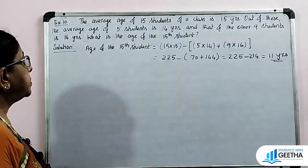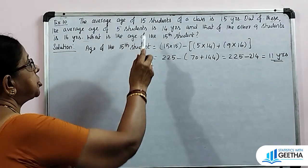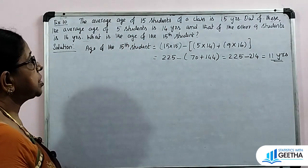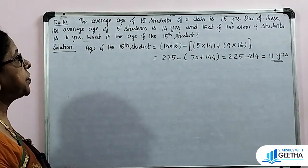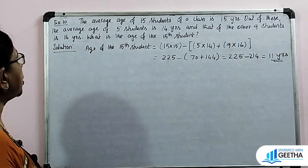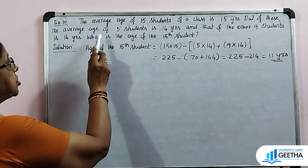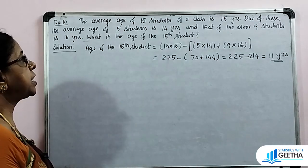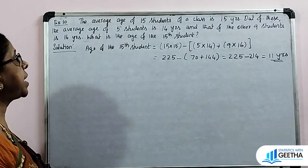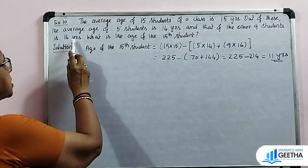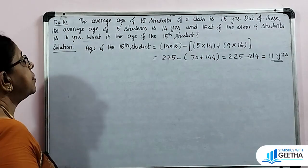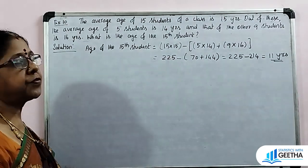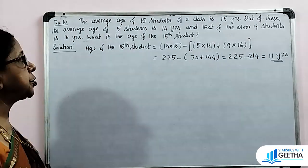Exercise number 10: The average age of 15 students of a class is 15 years. Out of these, the average of 5 students is 14 years and that of the other 9 students is 16 years. What is the age of the 15th student?